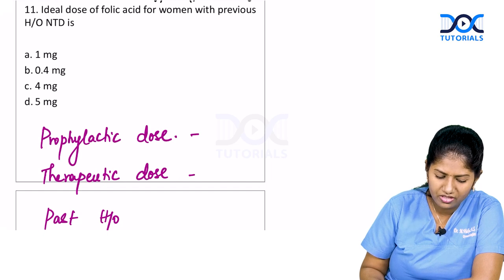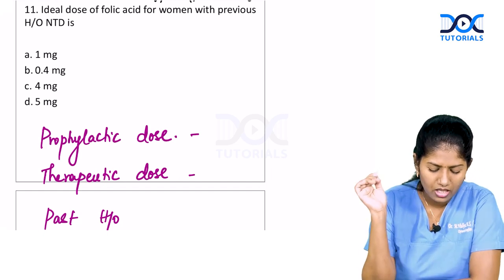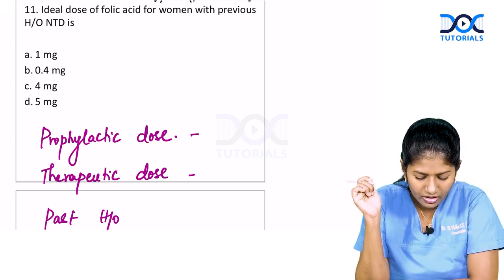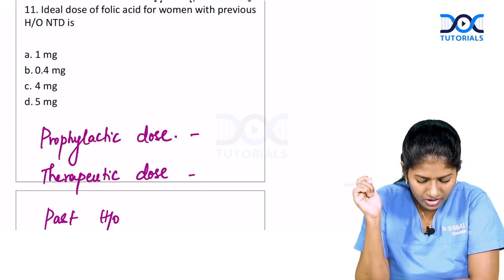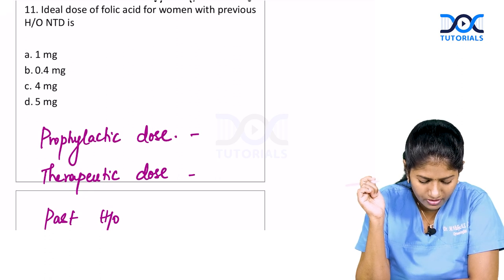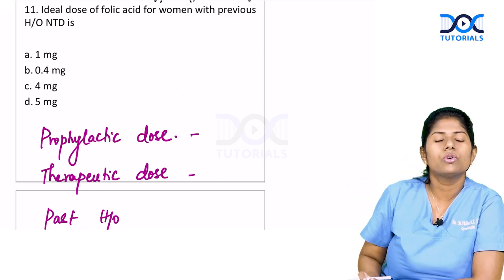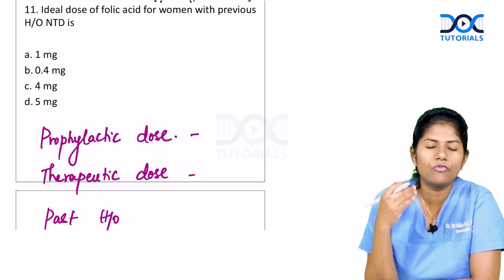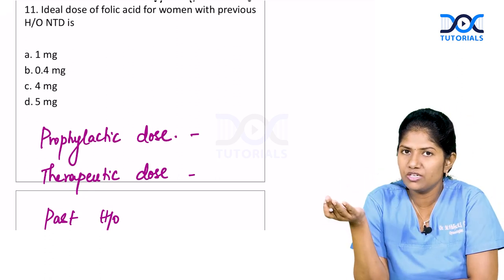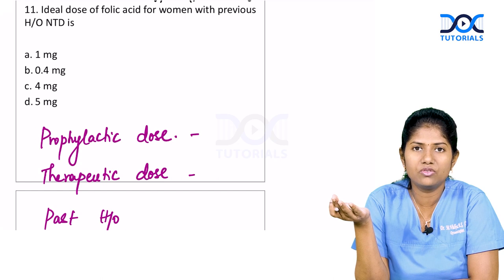The next question is about the ideal dose of folic acid for women with a previous history of neural tube defect. Folic acid is known to prevent neural tube defects.